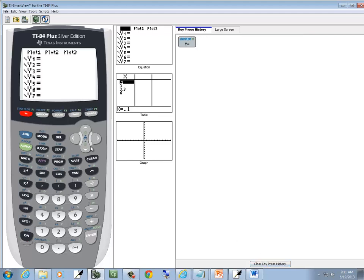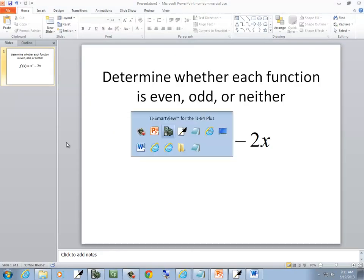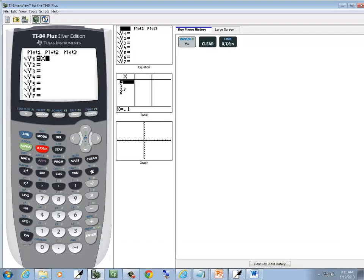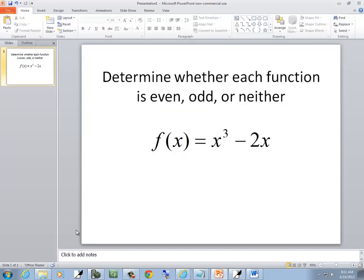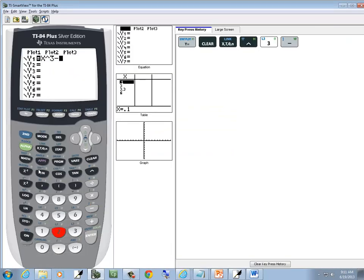Okay, so we're going to press Y equals. Press clear to clear whatever's in the line. And then we want to graph x to the third, so x carat 3, and then minus 2x. And then graph.